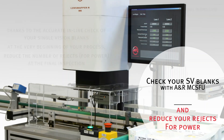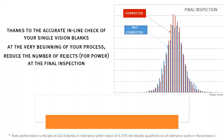Let's review the data provided by a lab. The blue curve is the distribution of the error on power, which is measured during the final inspection of the lenses and without adding any compensation during the lens surfacing process. In contrast, by using the measured data collected through the MCSFU and applying the compensation during the surfacing process, the lab gets the red curve, which illustrates a much narrower distribution.